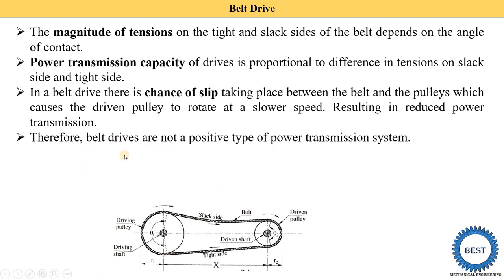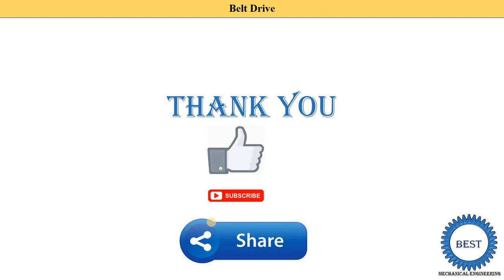Therefore, belt drives are not a positive type of power transmission system, because of slip. Slip means sometimes the driving pulley rotates but the belt does not slide, causing loss of transmission. Chain drives and various types of gear drives are considered positive type power transmission systems because in a positive type of system, slip does not occur.